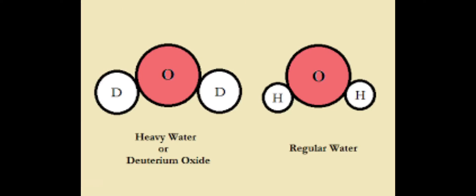Instead of being made of hydrogen and oxygen, heavy water is made of deuterium and oxygen. Deuterium is an isotope of hydrogen which has an extra neutron.